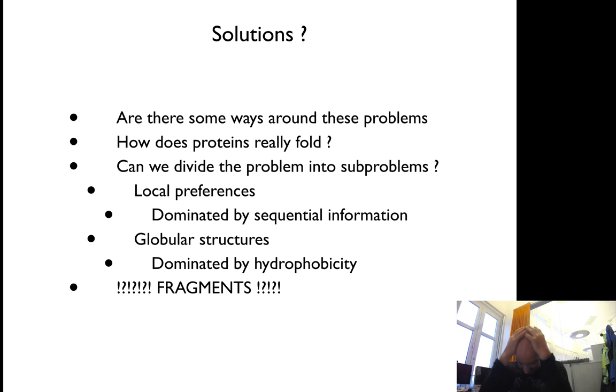So the question is, are there some ways to get around this? And what has come up lately, or in the last 15 to 20 years, is that we can actually divide this into two problems. We can divide it into a local problem—what is the preference of a few residues together.